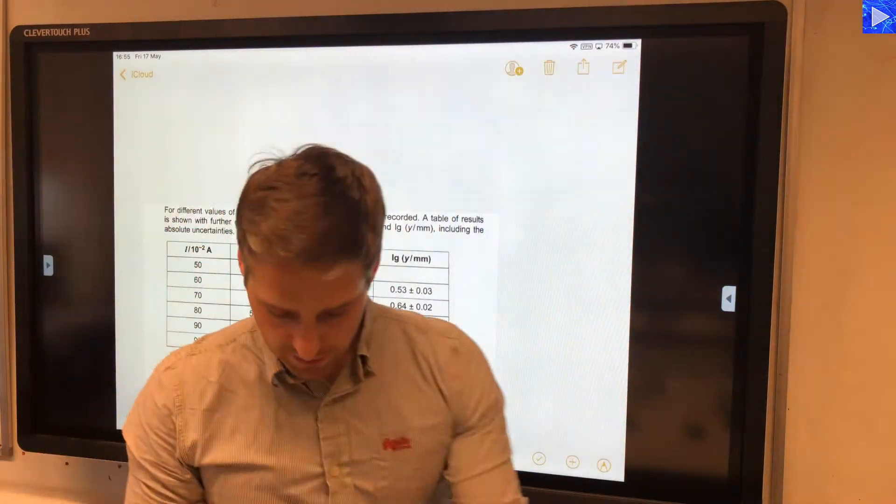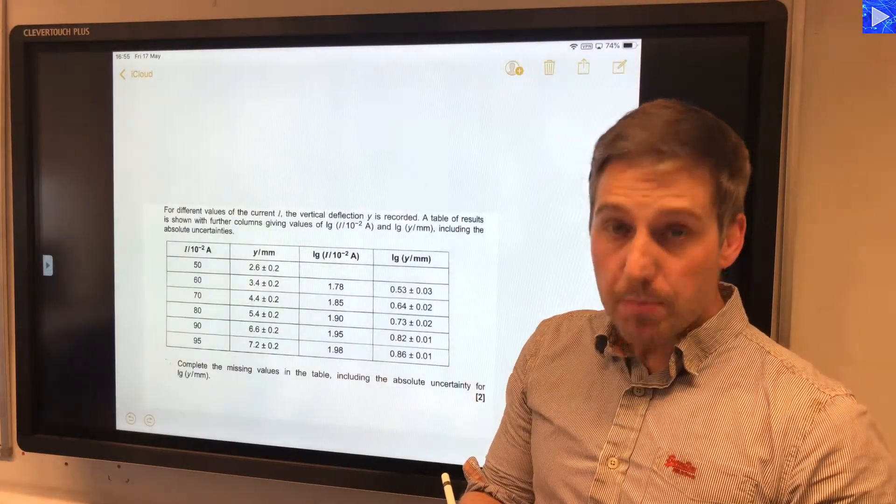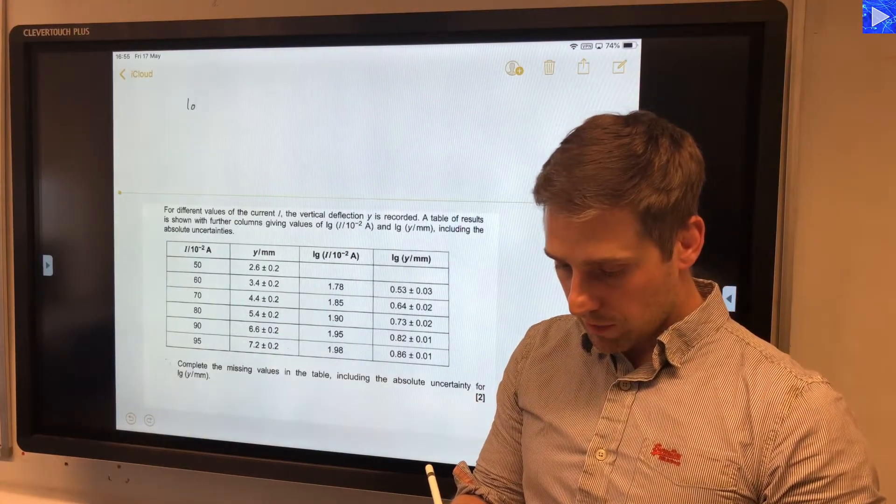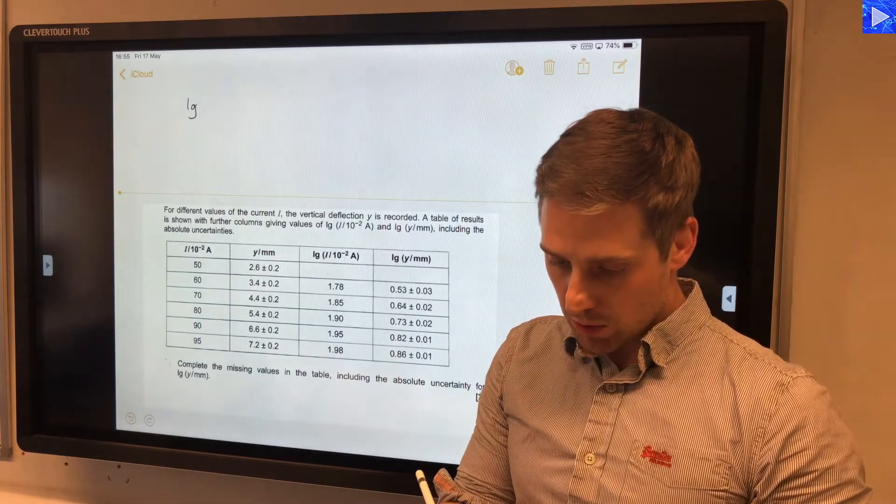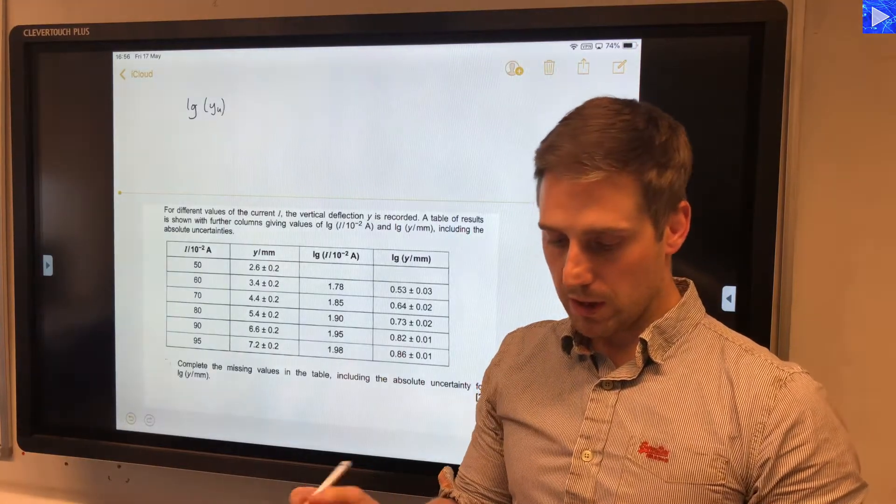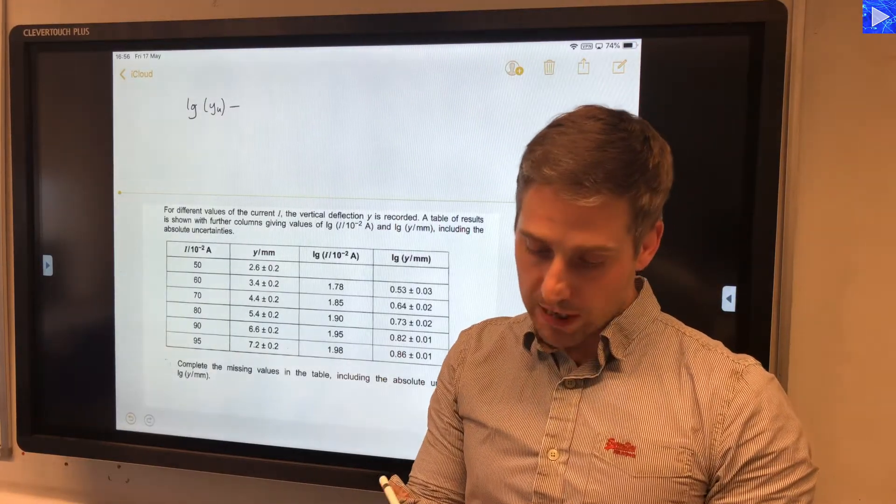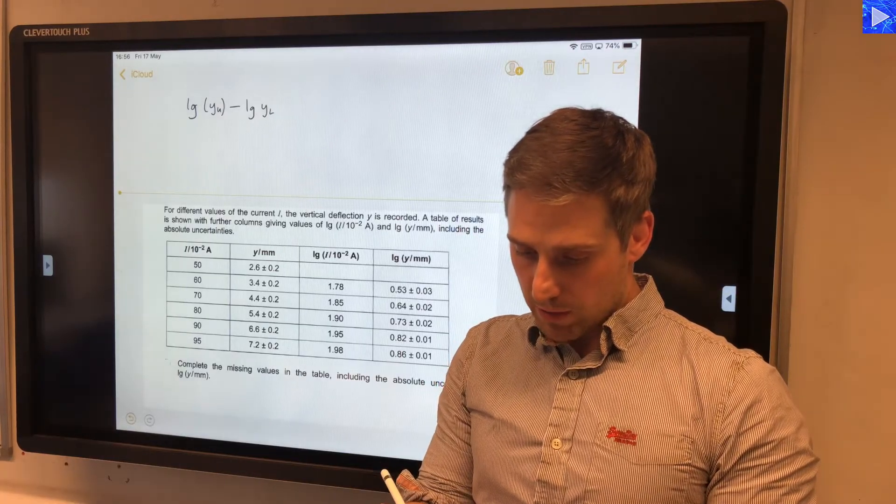So the general method is to take the upper value and log that. We log, if I just do base 10 log here, we log the upper value of y—I'm just going to write y_u for the upper value—and then we subtract the log of the lower value.